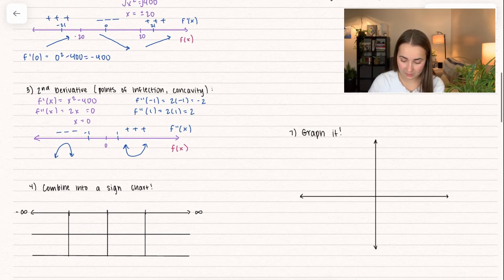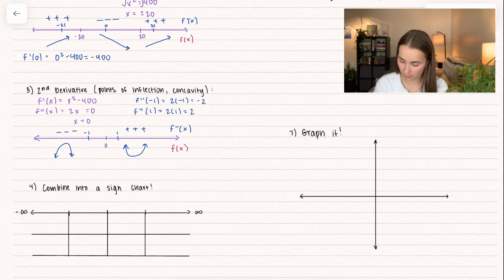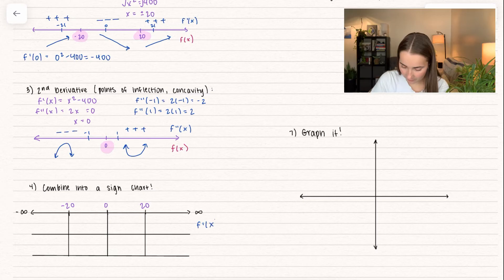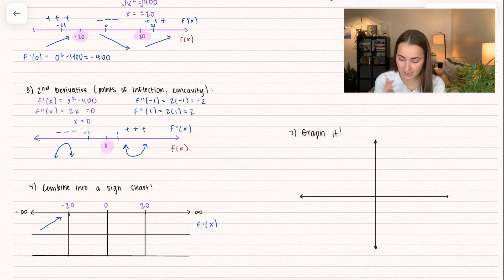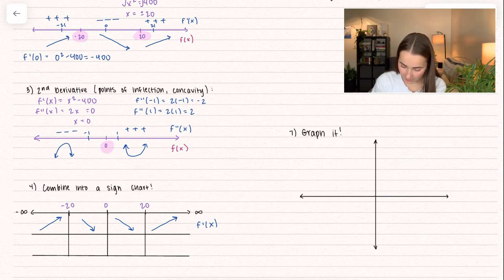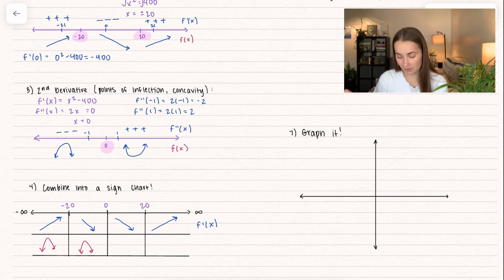We're going to combine the two charts into one sign chart. We need to fill in all critical values and inflection points: negative 20, 0, and 20. For the first derivative: from negative infinity to negative 20, the function is increasing; from negative 20 to positive 20, decreasing; from 20 to infinity, increasing again. For concavity: on the left side of 0, the function is concave down; on the right side of 0, it's concave up.